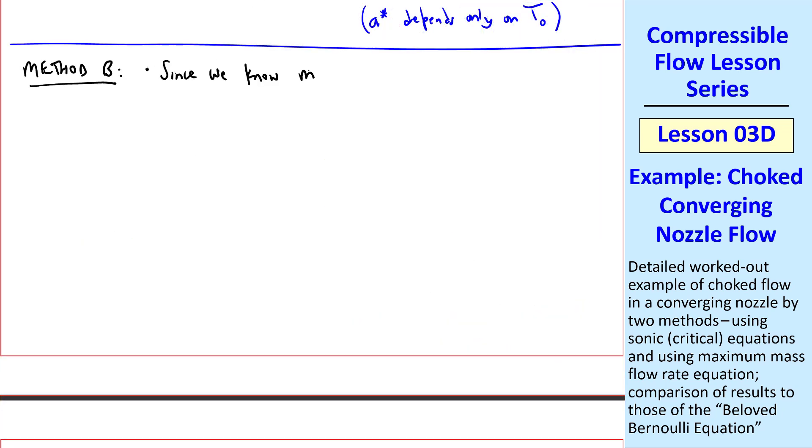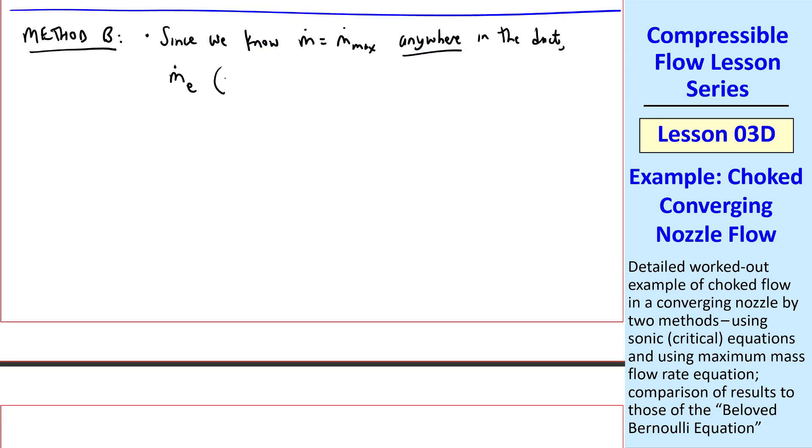I'll do this a second way, method B. Since we know that m dot equal m dot max anywhere in the duct, m dot E, the mass flow rate at the exit plane, must equal m dot max also. And we know that at this cross sectional location, the exit plane, m dot is rho E, VE, Ae, which we can solve for VE, m dot max over rho E, Ae. But again, we know that all the properties are critical properties at the exit plane. So we know that rho E equal rho star.